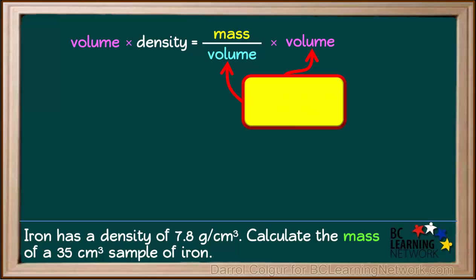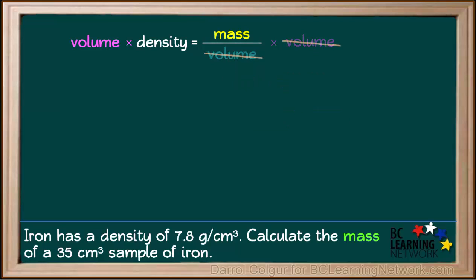On the right side, we have volume both in the numerator and the denominator, so we can cancel out the volume. This will leave us with only mass on the right side.